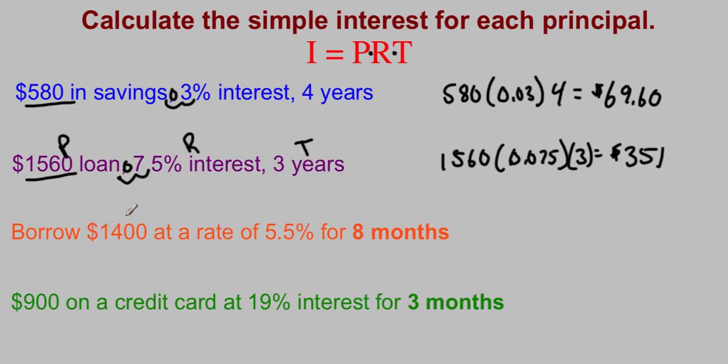Next one, you borrowed $1,400, that's your principal, at a rate of 5.5%, or 0.055, but this time is for 8 months. Remember, we put that little star next to the time because it was always measured in years. 8 months isn't a whole year. So when you put something like this in, it's 8 out of 12 months, so our time is going to be 8 twelfths. We're going to think of it as a fraction. 8 out of the 12 months because it's not a whole year.